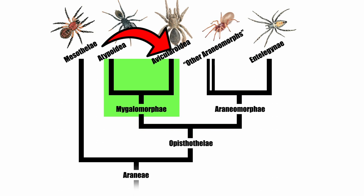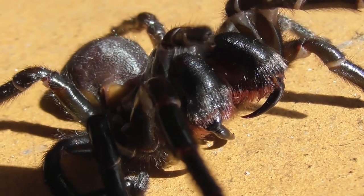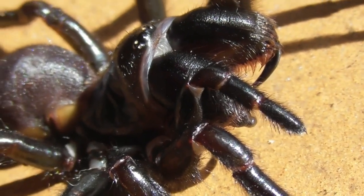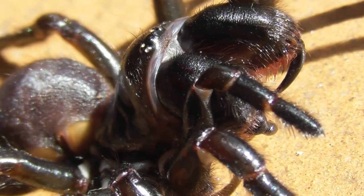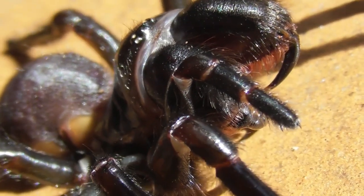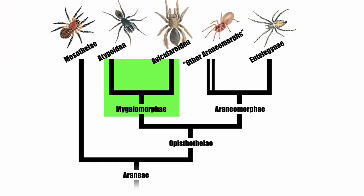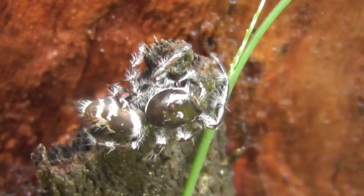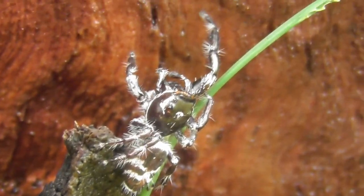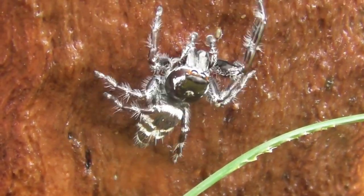Now let's take a look at the Avicularioidea, which make up the majority of mygalomorphs and include pretty much all of the group's most familiar members. All Australian mygalomorphs belong to this clade. The Avicularioidea completely lack tergites on the opisthosoma, which sets them apart from their sister clade, the Atypoidea, as well as the more distantly related Mesothelae. Having covered the mygalomorphs, let's move to the other major grouping within the Opistothelae — the Araneomorphae, which comprise the vast majority of spider species.